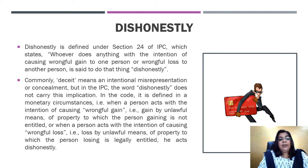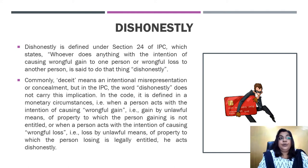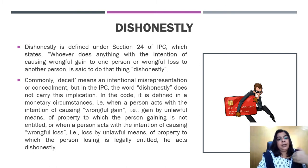So what comes under dishonestly? When a person acts with an intention to cause a wrongful gain — that is, gain by unlawful means of property to which the person gaining is not entitled — and there is wrongful loss by unlawful means of property of which the person losing is legally entitled — he acts dishonestly. That means one person owns the property, another person does not belong to that property, and the latter intentionally benefits himself or another who is not the owner — that is considered dishonest.